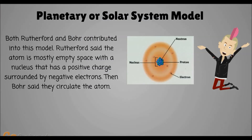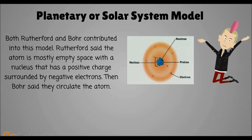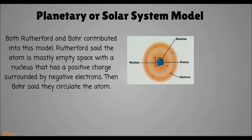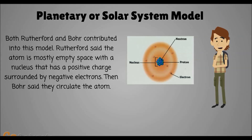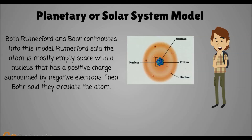Planetary or solar system model. Both Rutherford and Bohr contributed to this model. Rutherford said the atom is mostly empty space with a nucleus that has a positive charge surrounded by negative electrons, then Bohr said the electrons circulate the atom.